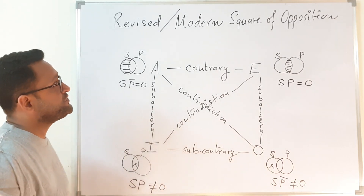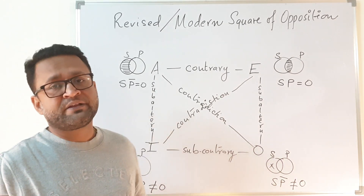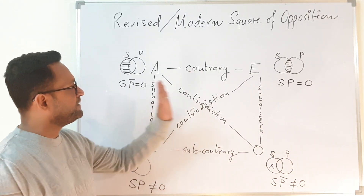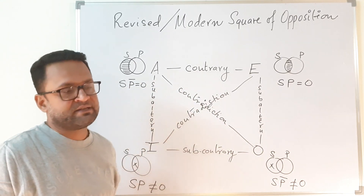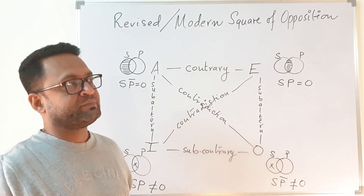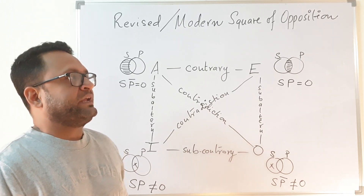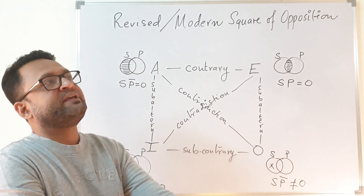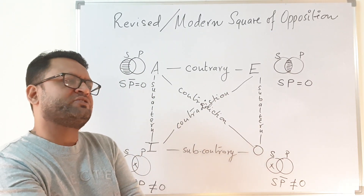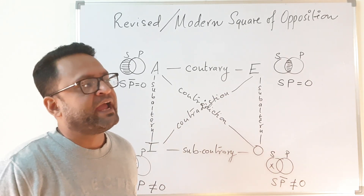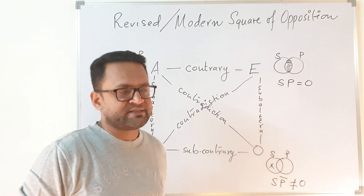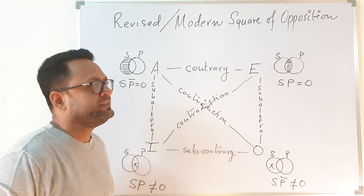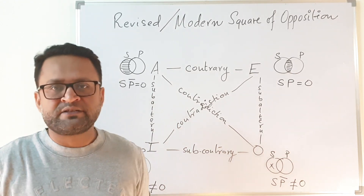Hello and welcome to the next lecture where we will be discussing the revised or the modern square of opposition. We know what the traditional square of opposition is, which we have discussed until now. Aristotle's ideas were picked up by medieval logicians who built upon their logic on Aristotle's logic only — called sometimes Aristotelian logic, sometimes traditional logic — and there you will find the relations as we discussed in the traditional square of opposition.